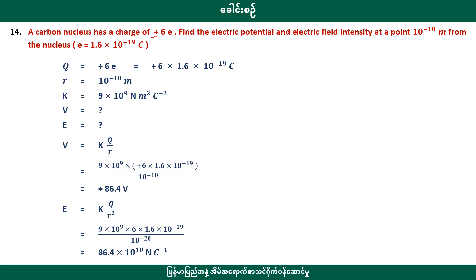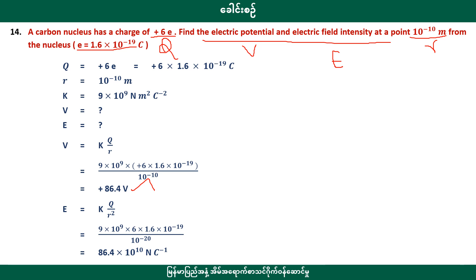Carbon nucleus has a charge of plus 6e. Using k equal to nine into ten to the power nine Newton meter squared per coulomb squared, and V equals kQ over r, we get the electric potential. The answer is positive 86.4 volts. Then using the electric field formula, the result is approximately 87.4 into ten to the power of some unit in coulombs.